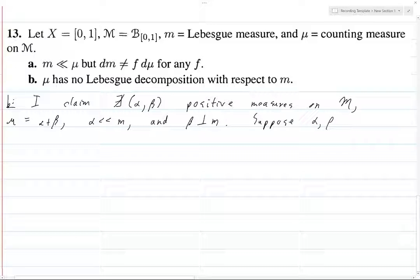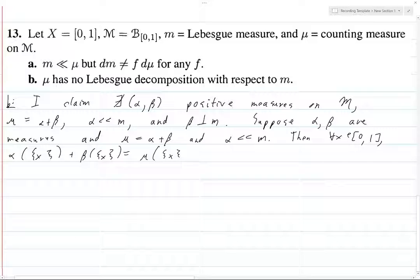So suppose it is the case that alpha, beta are measures and mu equals alpha plus beta, and alpha is absolutely continuous with respect to the Lebesgue measure. Then what does this imply? Then for all x in our interval, alpha value at the point x plus beta value at the point x, well, this is just by definition mu of x, or by choice, rather. And what is this? This is a counting measure, so that's 1.